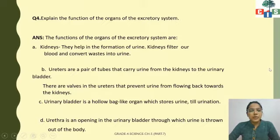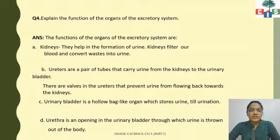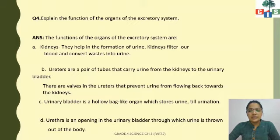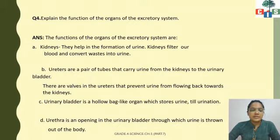Question number four: explain the functions of the organs of the excretory system. The first organ is the kidney. Kidneys help in the formation of urine — they filter our blood and convert waste into urine. So the blood is being filtered and urine is being formed inside the kidney.